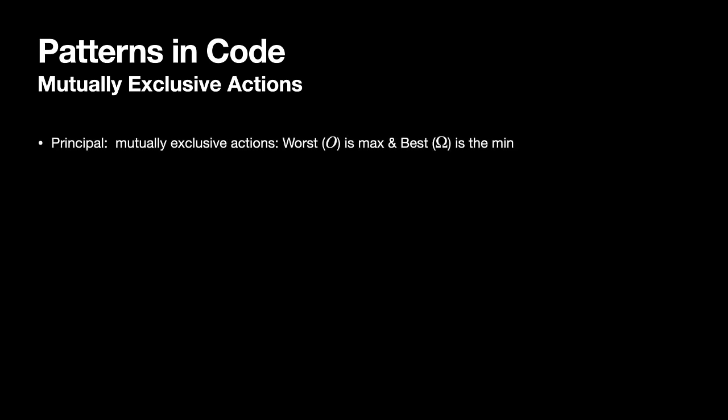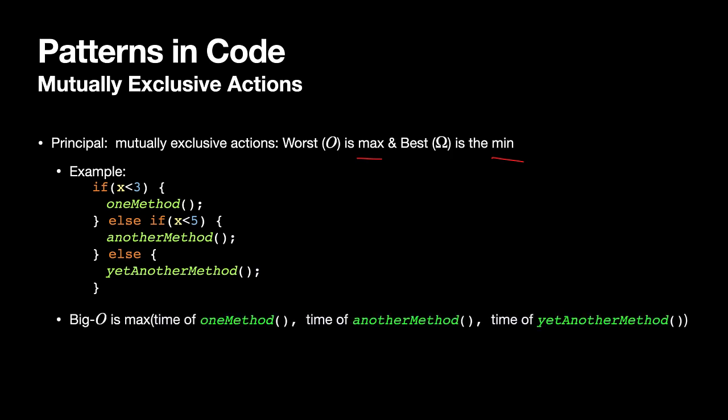So again, let's look at this principle in code. If we're looking at mutually exclusive actions, we're worried about either the worst case, the big O is the maximum, or the best case, the omega is the minimum. So an example in code, imagine that we've got an if-else statement. So this is an if-else-if-else. In this case, there are three mutually exclusive options, and it's really important that they're nested in this way. If they weren't nested in this particular way, I may have to think about this problem differently. So if I want to know what the worst case time is, it's going to do one of these three options, but only one of them. It's the maximum of the time either taken by one method, the method named one method, or the time taken by the method called another method, or the time taken by the method called yet another method. Big omega would just be the minimum of these three. It's going to do one of these three. The minimum of them is the best I could expect out of this.